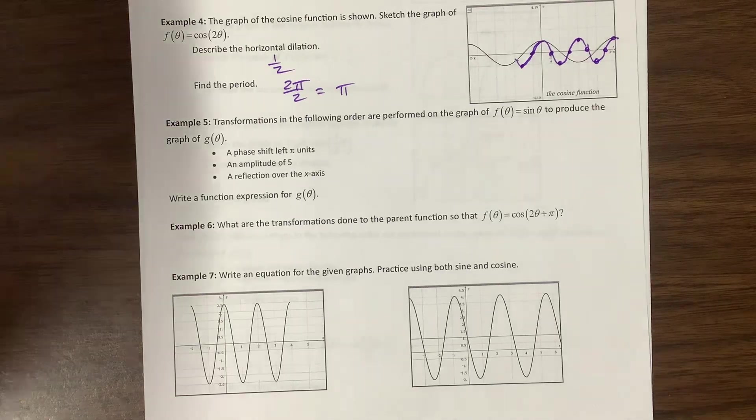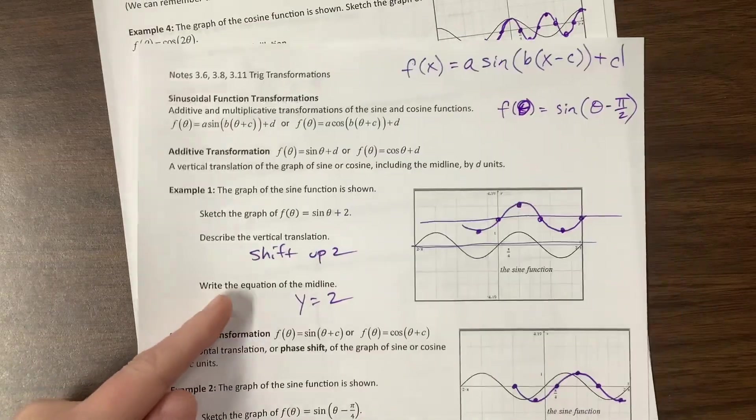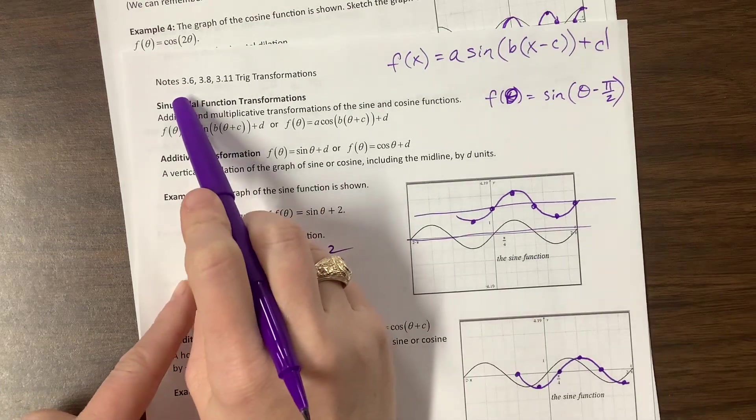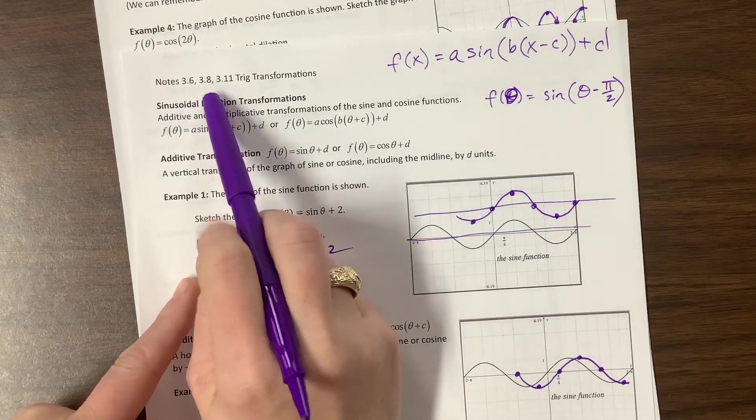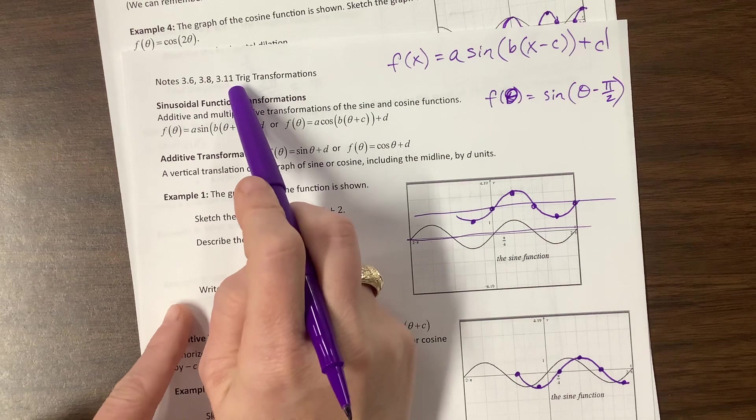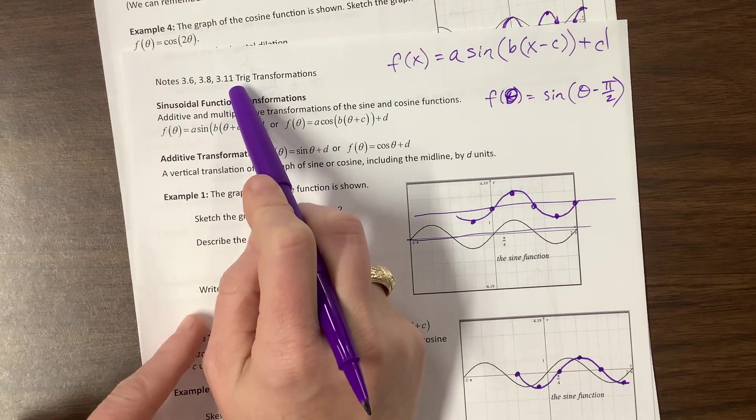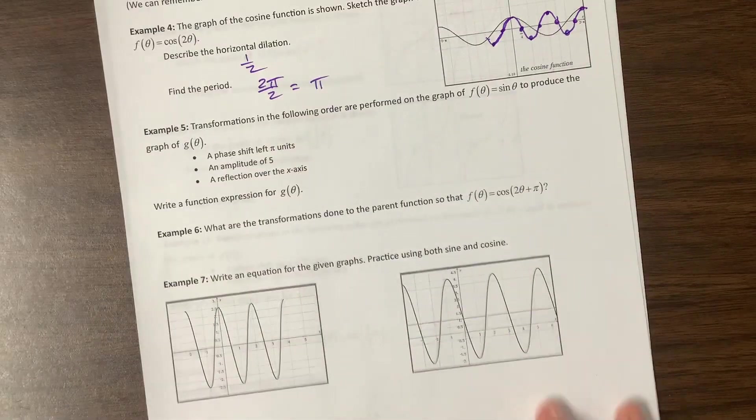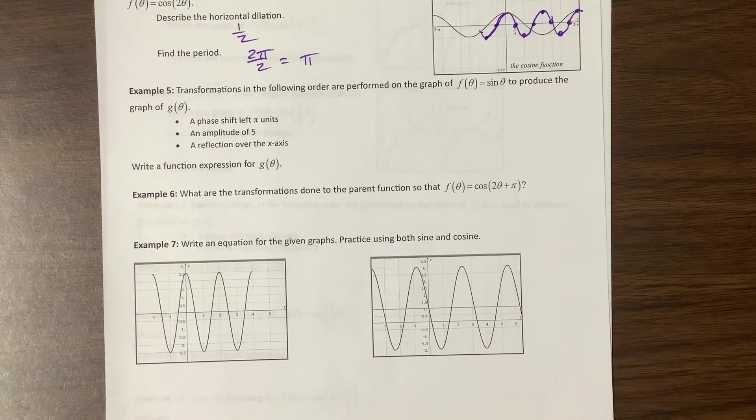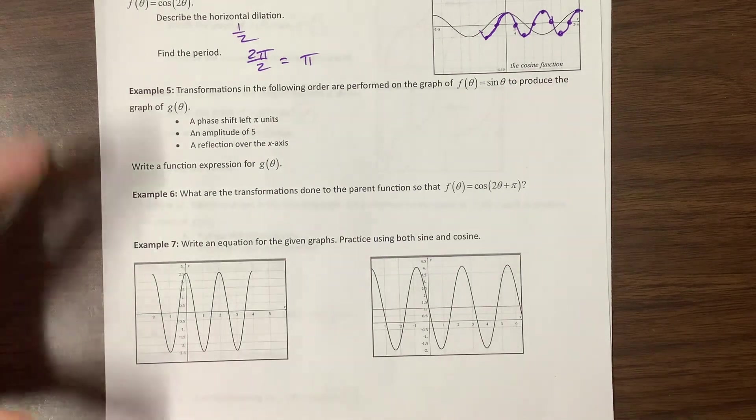Howdy, AP Precalc. We are continuing our transformation notes, so I think we're still in section 3.6 because 3.8 introduces tangent and then 3.11 introduces the other three parent functions, and we're still doing stuff with sine, but what made sense to me was to do all the transformations together.